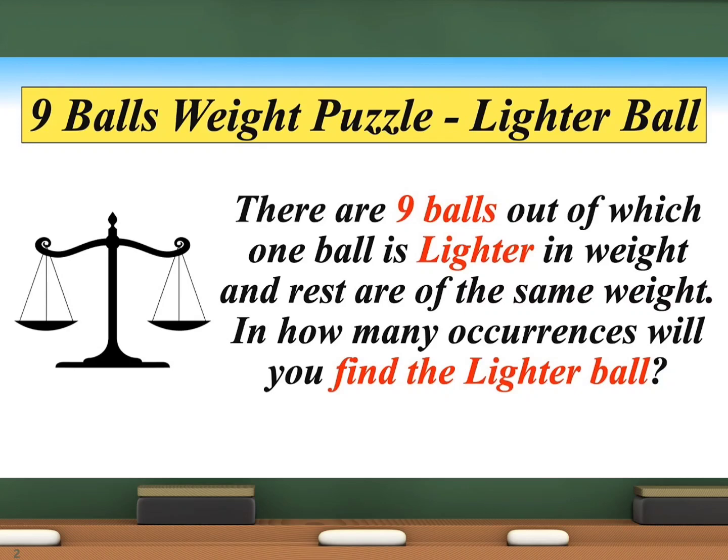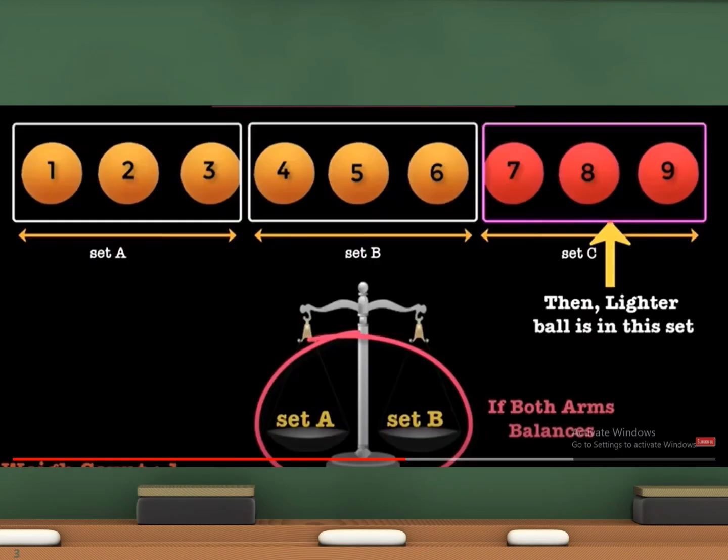We may find some other solution where the number of occurrences, that is the number of weighings it takes to find the lighter weight ball, is reduced. The efficient solution for this puzzle is to divide the number of balls into 3 sets of 3. Set A contains 3 balls, set B contains 3 balls, and set C contains 3 balls.